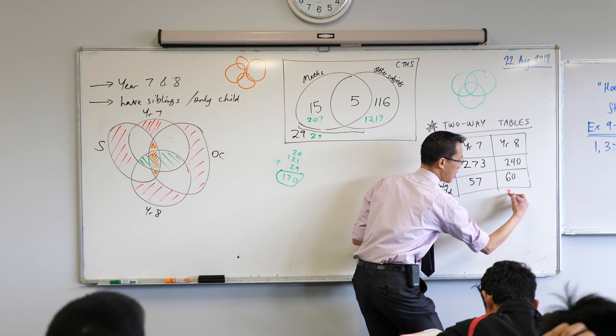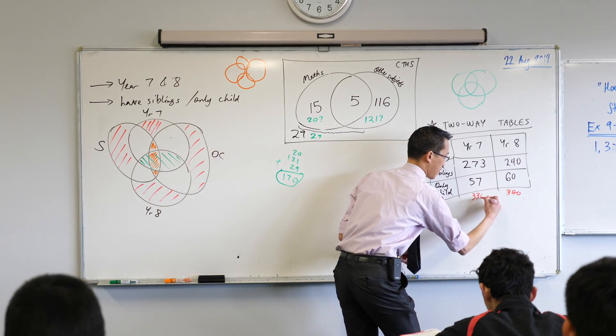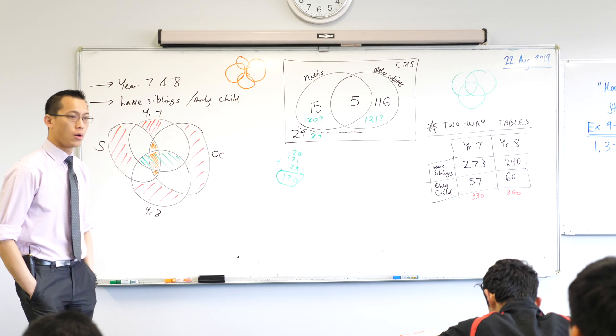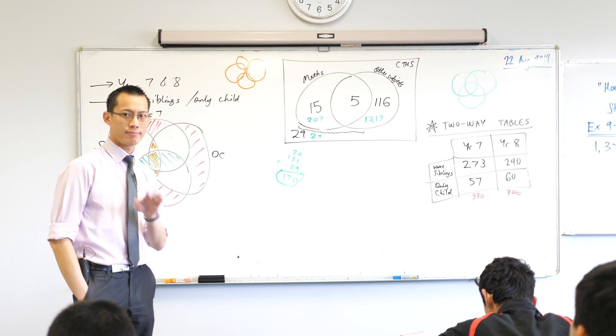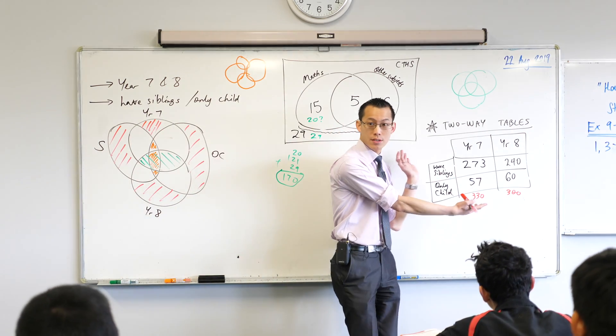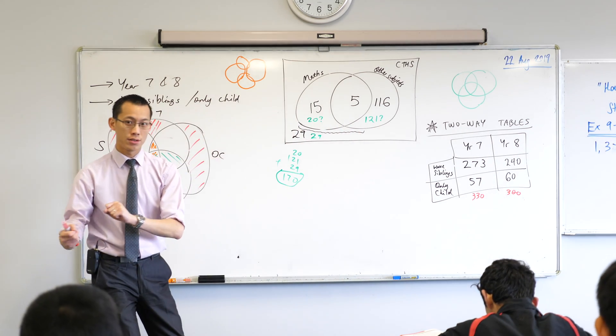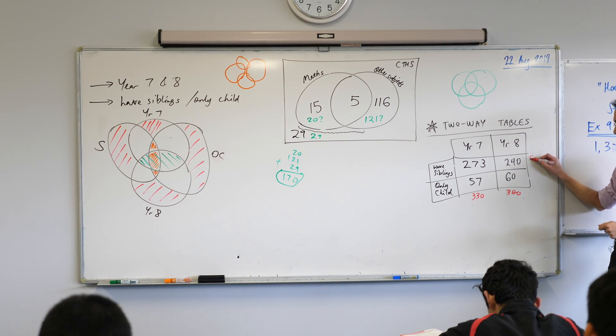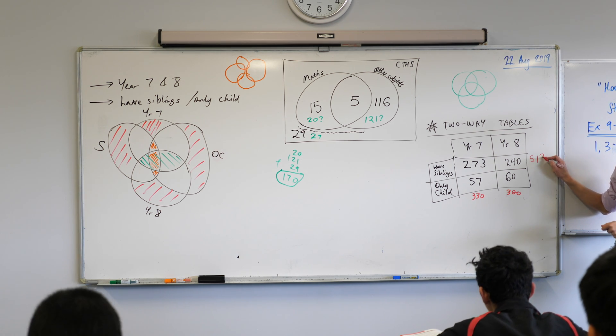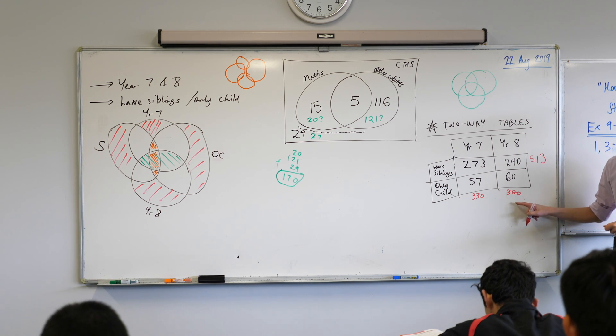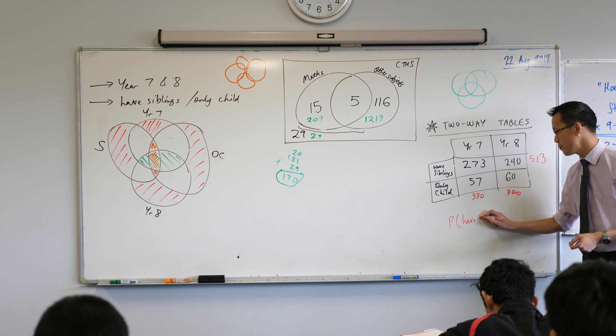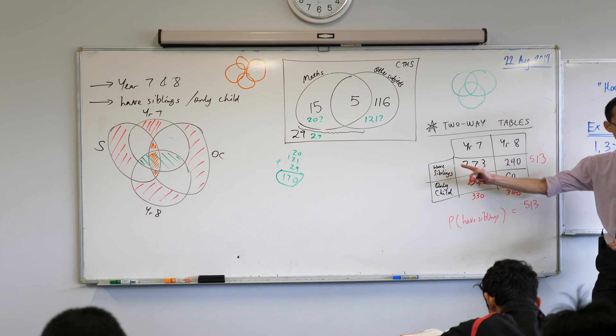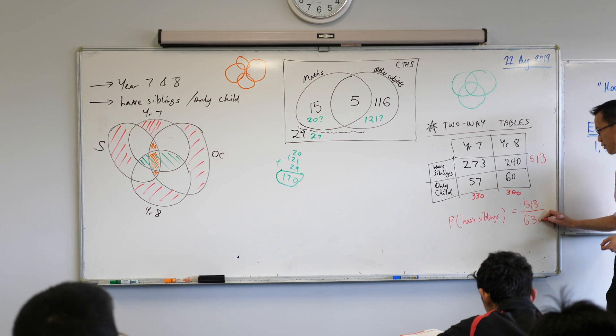And in fact, sometimes you'll see a number down the bottom, which ends up showing the total, 630. I could ask you, for example, if I picked out a random Stage 4 student, what's the chance that they have siblings? Have a think about it for a second. If I picked out a random Stage 4 student, one of these students, what would be the chance that they have siblings? There's a number I need to calculate, which I haven't calculated yet. 513. Over 630. So that probability of having siblings would be my favourable outcomes, of which we just found 513 of them, bless you, divided by my total sample space.